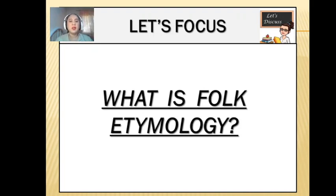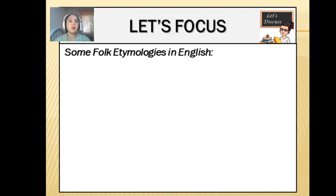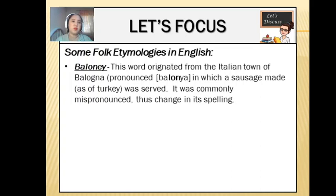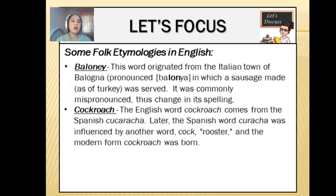Let's talk about some examples of folk etymologies in English. The first one is the word baloney. This word originated from the Italian town of Bologna, in which a sausage made of turkey was served. That sausage was commonly mispronounced, and that's why they changed its spelling to baloney.